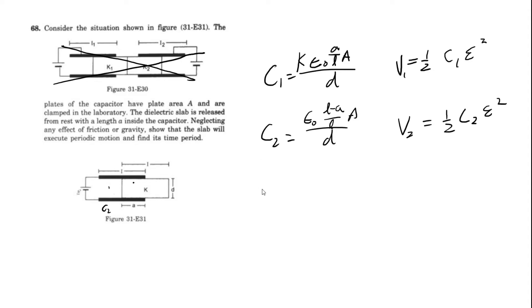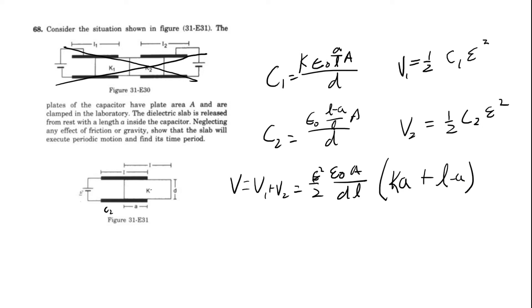So now we can find the total potential energy, which is equal to V1 plus V2, which is equal to 1 half the EMF squared over 2 times, let's pull some factors out of these. So we can pull out epsilon naught A over D. And we can even pull out the L, right? And then that will leave us with the remaining things, which is just going to be K times A plus L minus A.